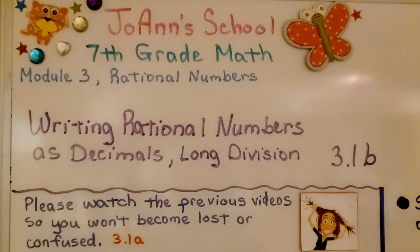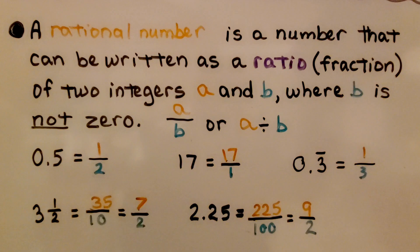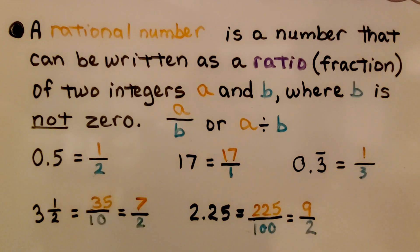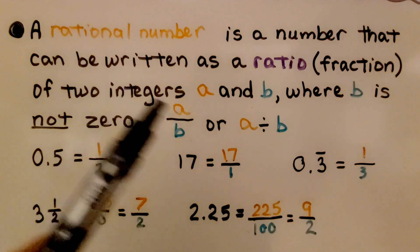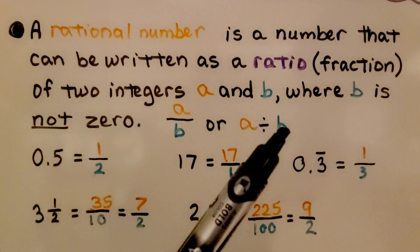Lesson 3.1b: Writing Rational Numbers as Decimals Using Long Division. A rational number is a number that can be written as a ratio, a fraction, of two integers a and b, where b is not zero, otherwise it's undefined. The numerator is a, the denominator is b, we have a divided by b.